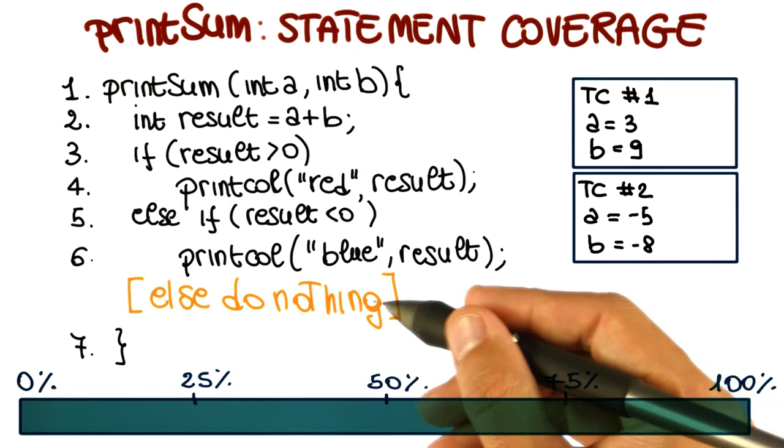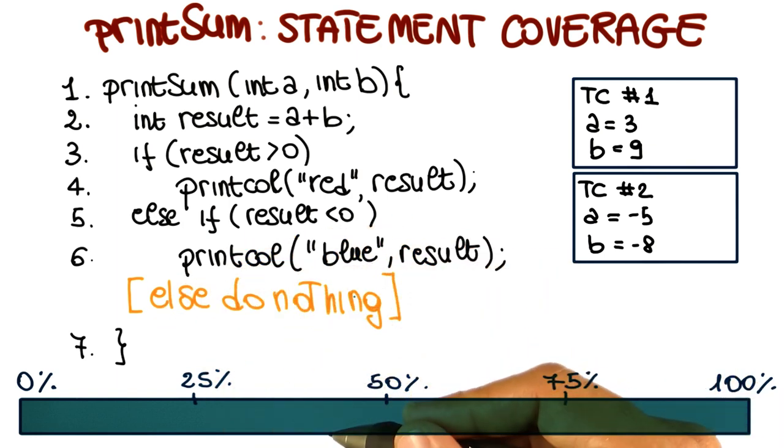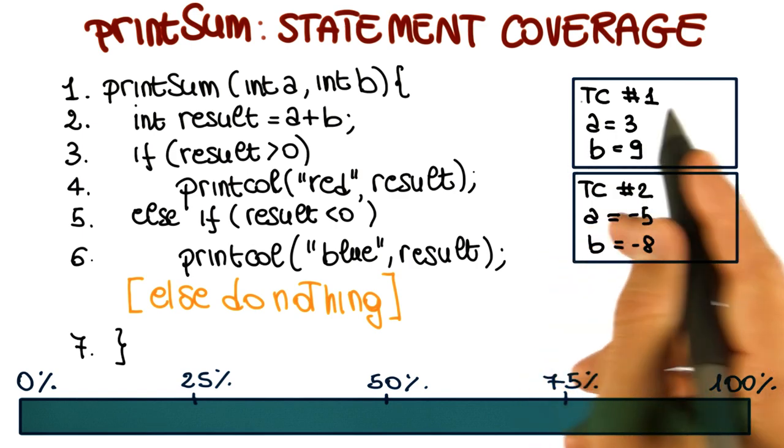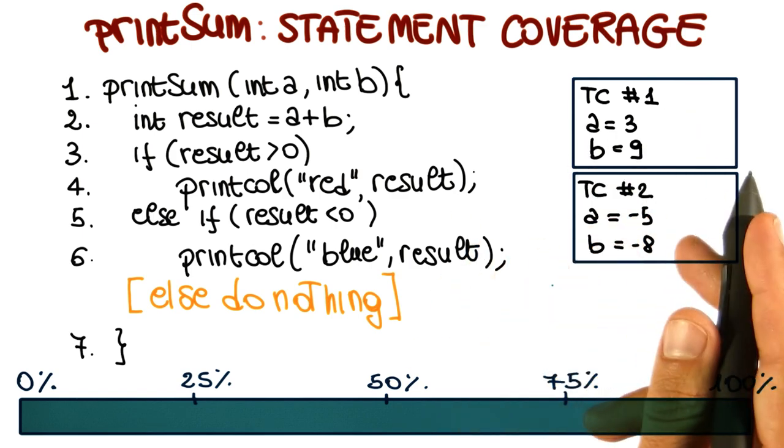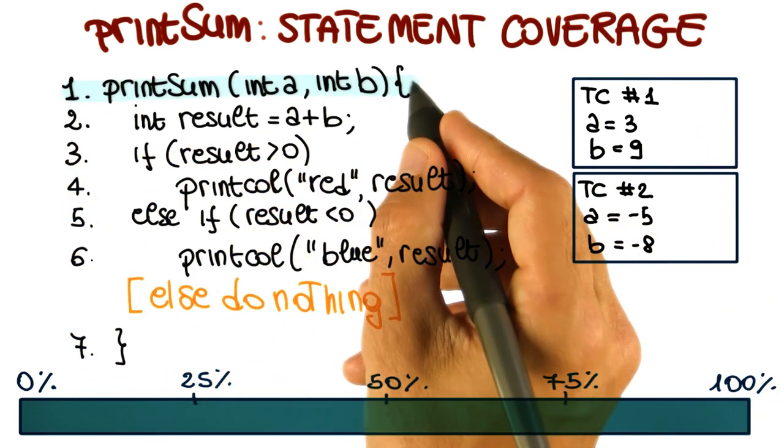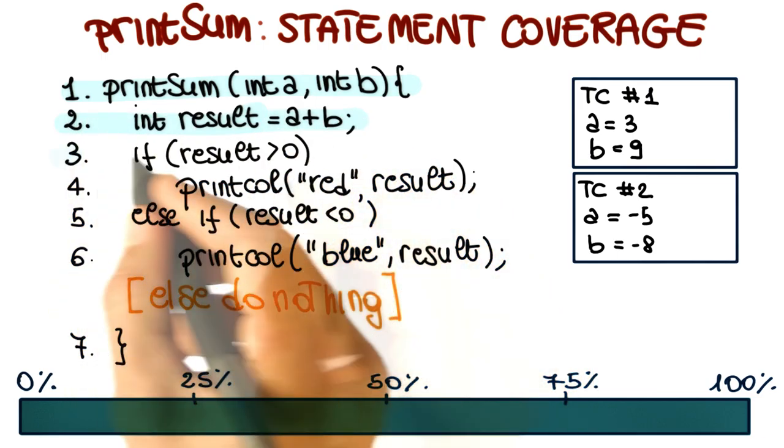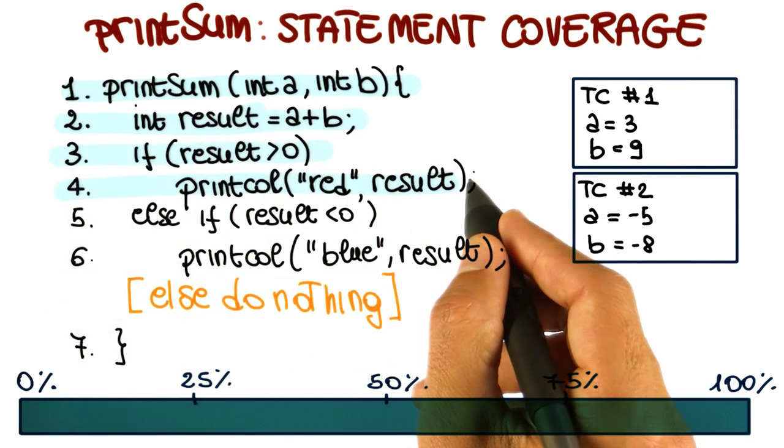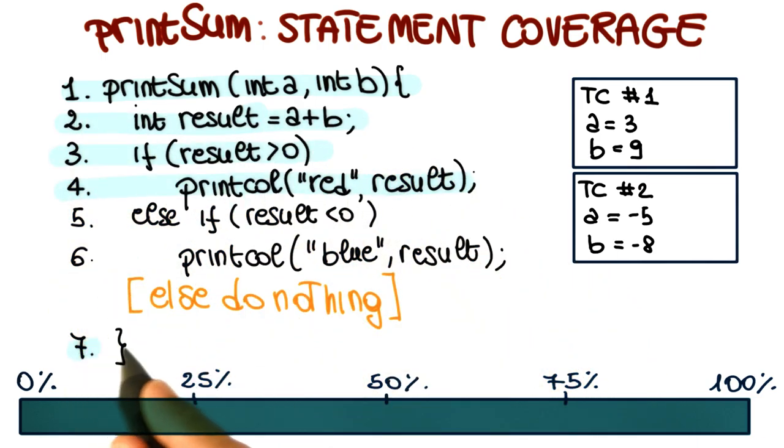So now let's look again at our test cases. Let's consider the first one, and I'm going to go a little faster in this case because we already saw what happened. If we execute the first test case, we get to this point, we execute this statement, and then we just jump to the end, as we saw.